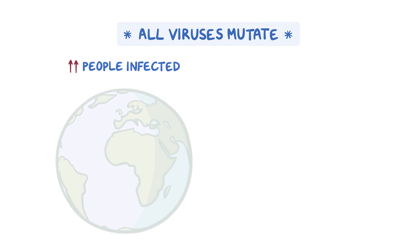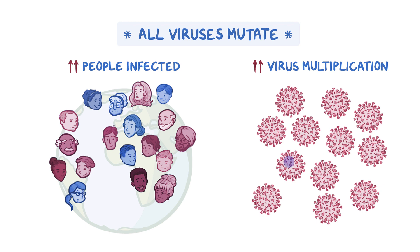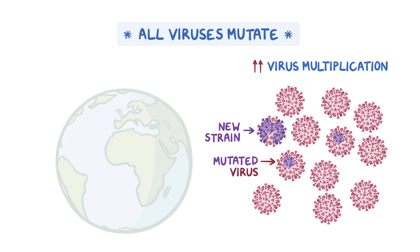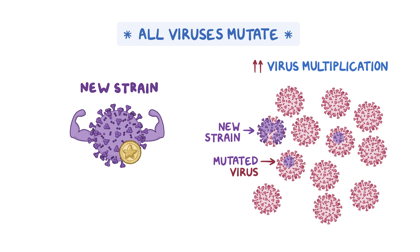All viruses mutate. As more people get infected with a virus, the virus has more opportunities to multiply and there are more chances that a mutation may occur. A mutated virus can be considered a new strain when the virus has enough mutations to make it distinct from the original virus. So often new strains appear in places with uncontrolled outbreaks. The new strains can become a problem when the mutation gives the virus an advantage, such as making it easier to quickly spread or increasing the infection severity.